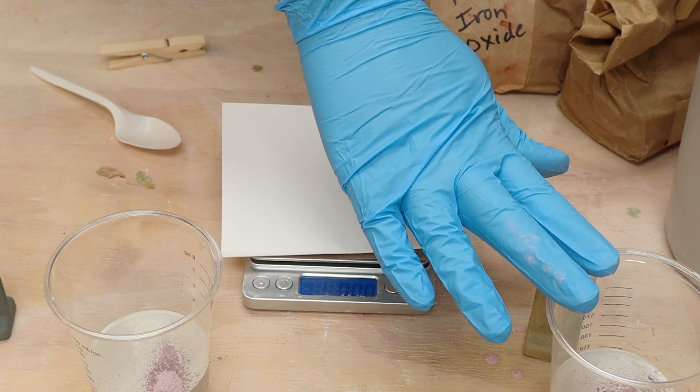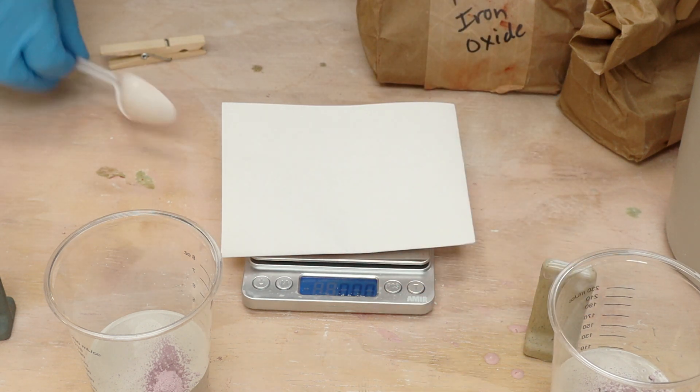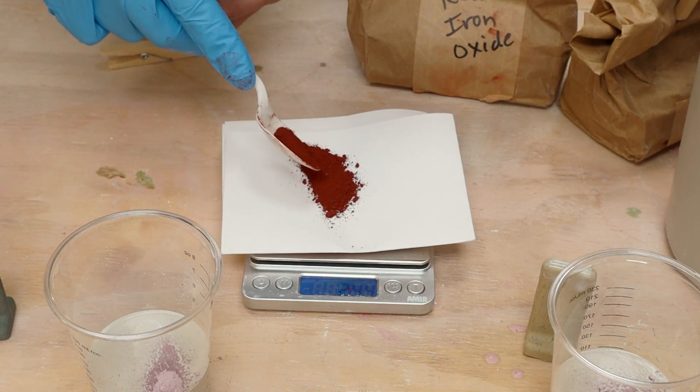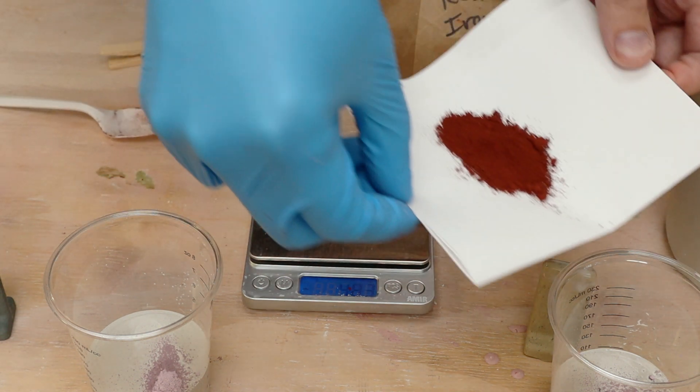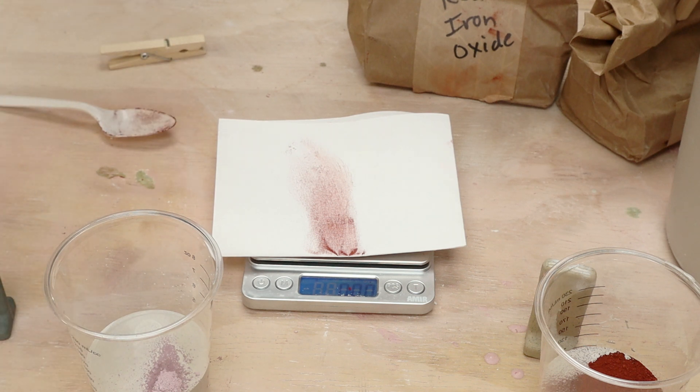So to get this one up to the right ratio, I need 4.1 grams of iron oxide. And to get this one up to the 9.25, I need 3.9 grams.